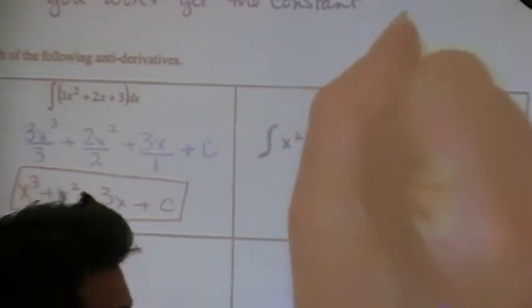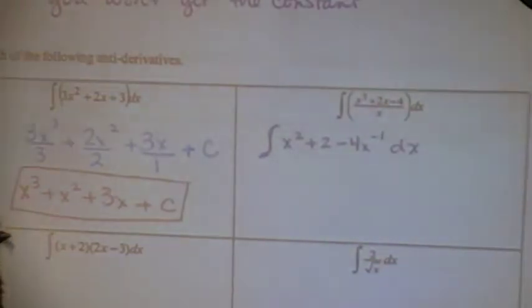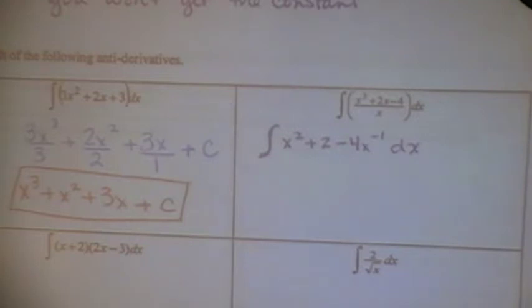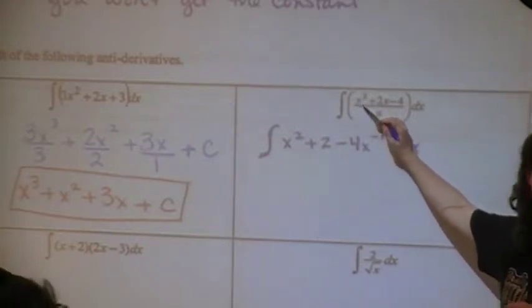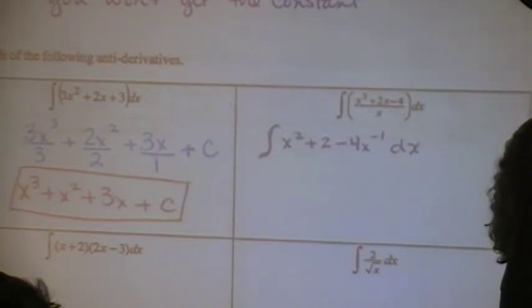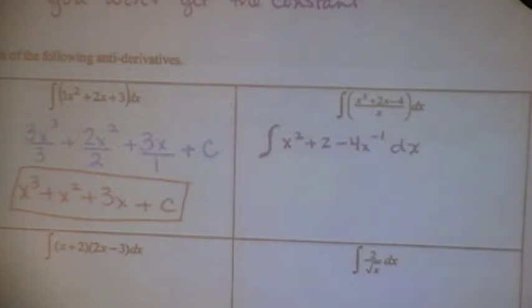Before I take the anti-derivative of this, I'm going to rewrite it — because rewriting is my friend. So this will be X squared plus 2 minus 4X to the negative 1. The anti-derivative of X squared plus 2 minus 4X to the negative 1 dx. I just rewrote the inside piece. It was X cubed over X, plus 2X over X, minus 4 over X — that's X squared, those cancel, and that works out. Okay, now we'll take the anti-derivative.